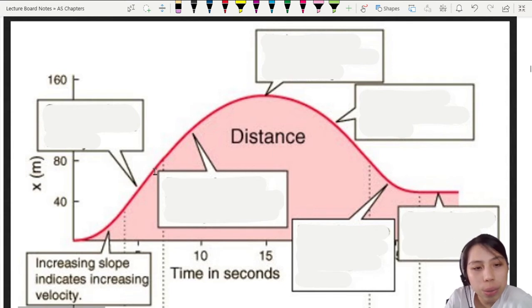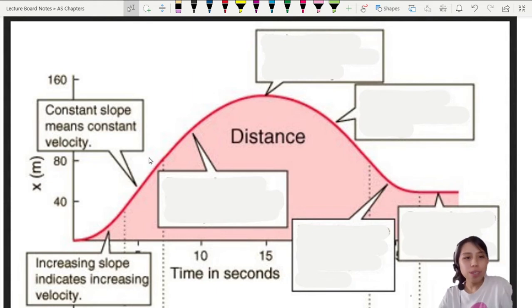Then you look at this part, it's a straight line. So you must say that constant slope means constant velocity. The slope is velocity, so when you want to talk about slope, you talk about velocity.